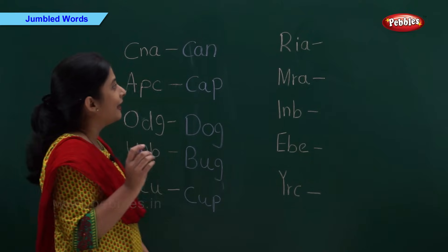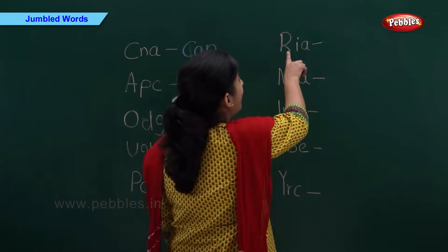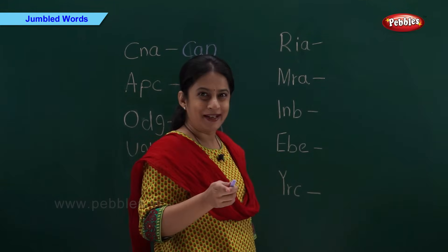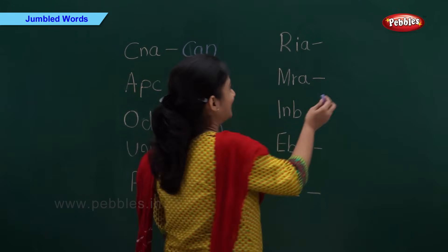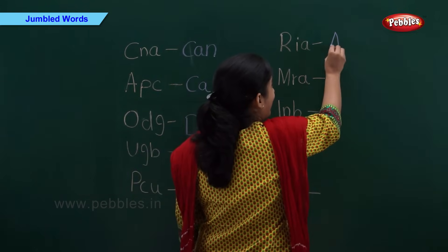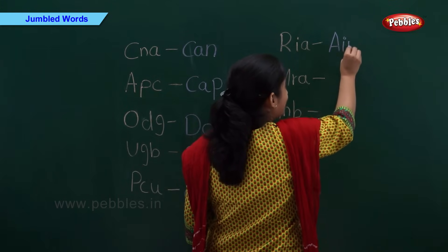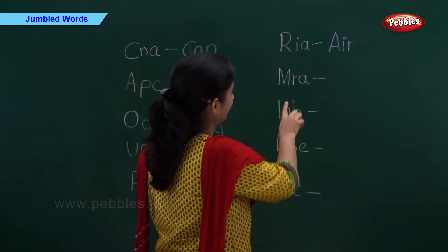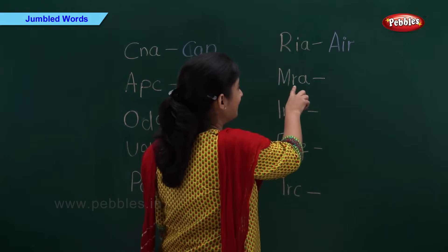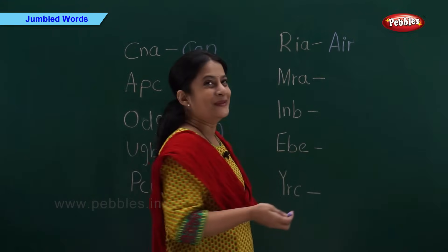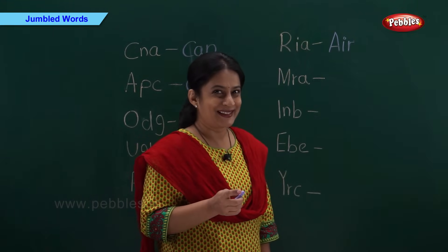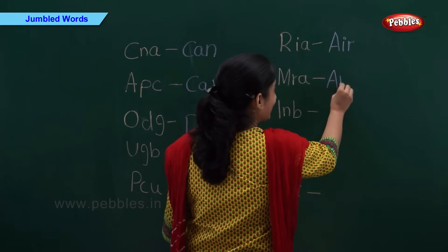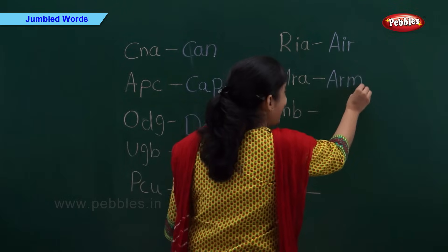Cup. And now here we have R-I-A. Can anyone tell me? Correct. A-I-R. Air. And now we have M-R-A. Tell me fast. A-R-M.